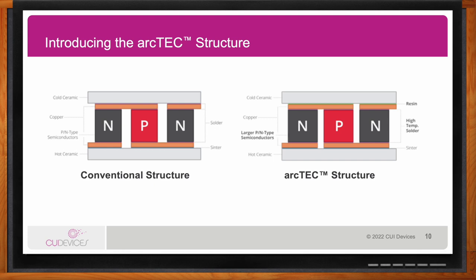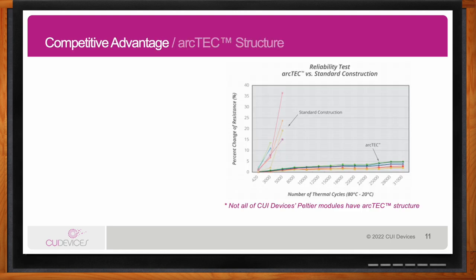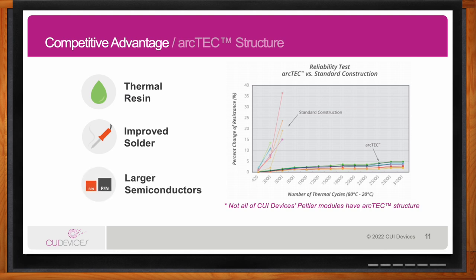This thermal stress can cause degradation of performance over time, but by adding the ARC tech structure — the thermally conductive resin layer — CUI Devices reduces thermal stress and in turn increases the potential lifetime of the Peltier. In addition to the thermal resin layer, they also use a high-temperature solder rated up to 235 degrees Celsius and particularly large semiconductor pellets to assist in uniform temperature across the surface of the Peltier ceramic.